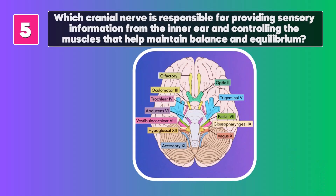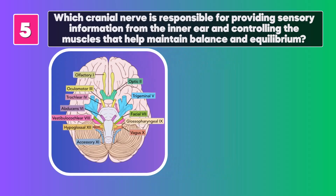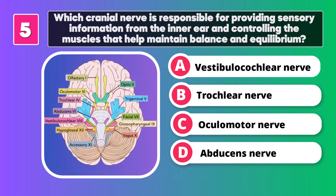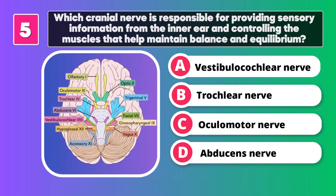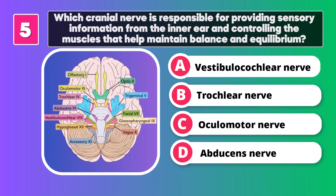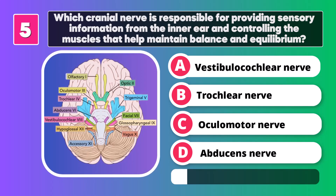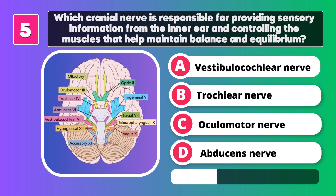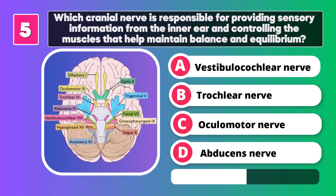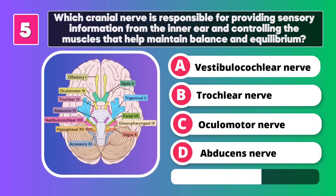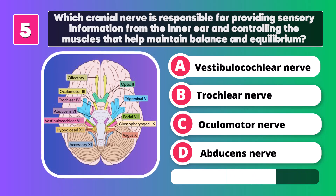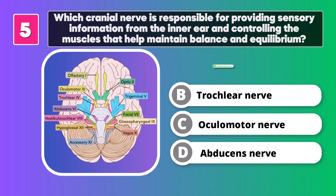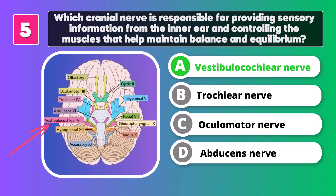Which cranial nerve is responsible for providing sensory information from the inner ear and controlling the muscles that help maintain balance and equilibrium? Vestibulocochlear nerve.